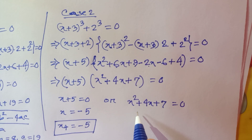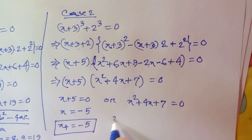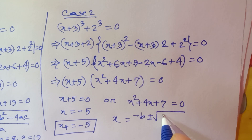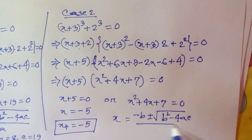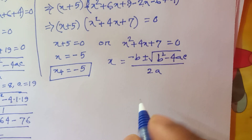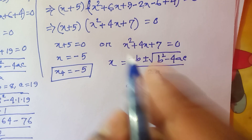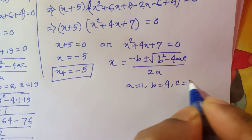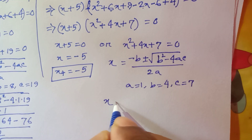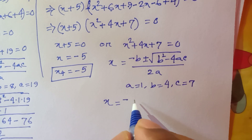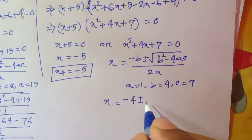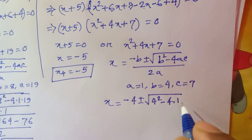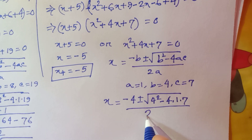For x squared plus 4x plus 7 equals 0, this is a quadratic equation. Using x equals negative b plus or minus square root of b squared minus 4ac over 2a, with a equals 1, b equals 4, c equals 7: x equals minus 4 plus or minus square root of 4 squared minus 4 times 1 times 7, over 2.